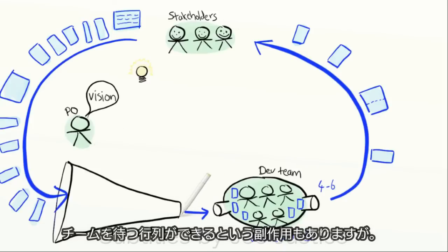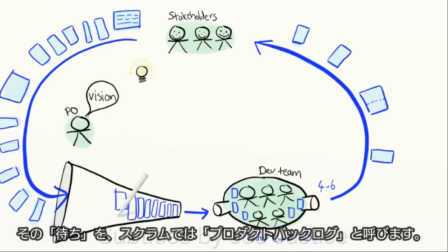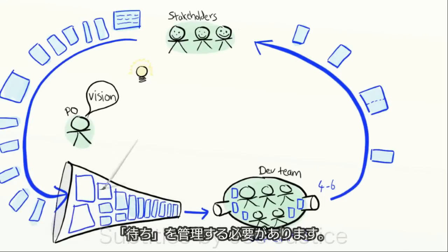A side effect though is that there will be a queue forming in front of the team. And that queue in Scrum is called a product backlog. The queue needs to be managed.